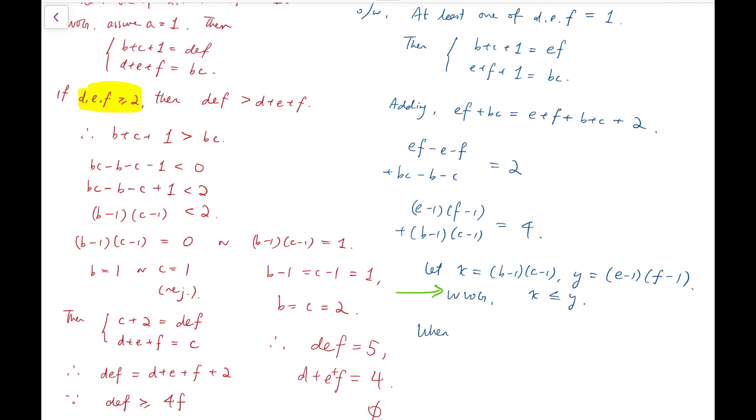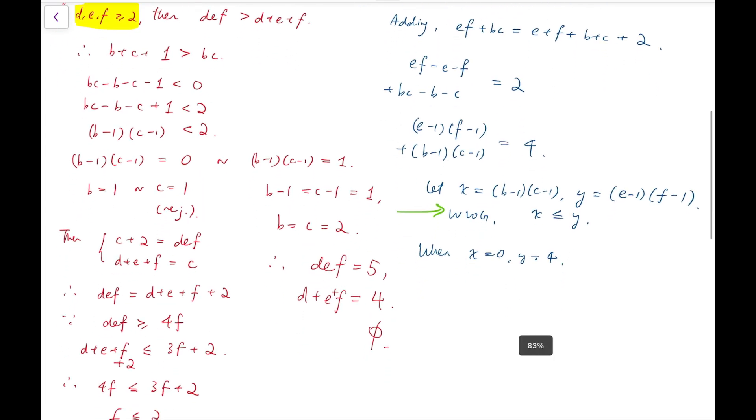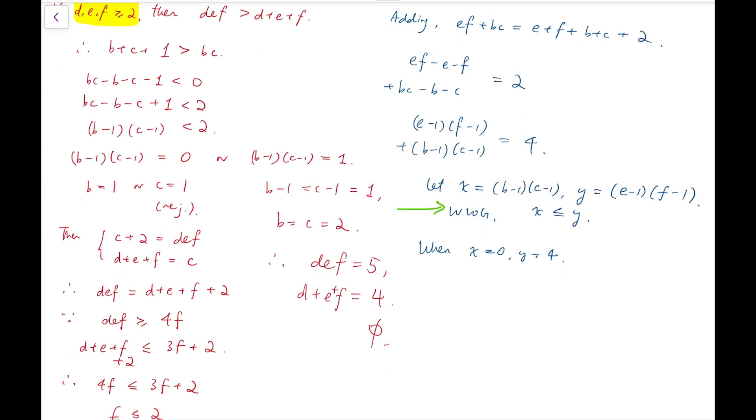So when x equals 0, y equals 4, we've actually done similar things before. So that means b equals 1, and then at the same time for y equals 4, I will have (e minus 1)(f minus 1) to be either 1, 4, or 2, 2. No more 4, 1, because e has to be at most equal to f. So solving, I will have b equals 1, e equals 2, f equals 5, or b equals 1, e equals 3, f equals 3.